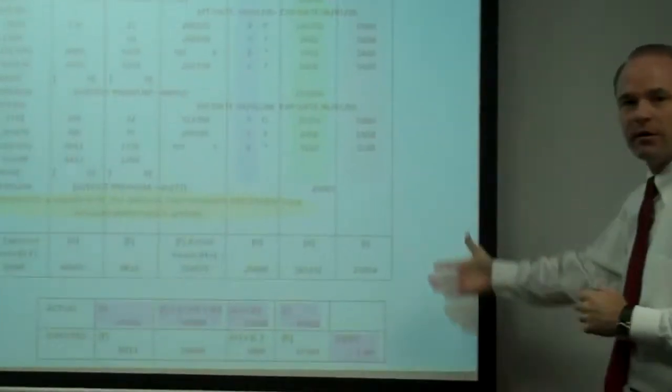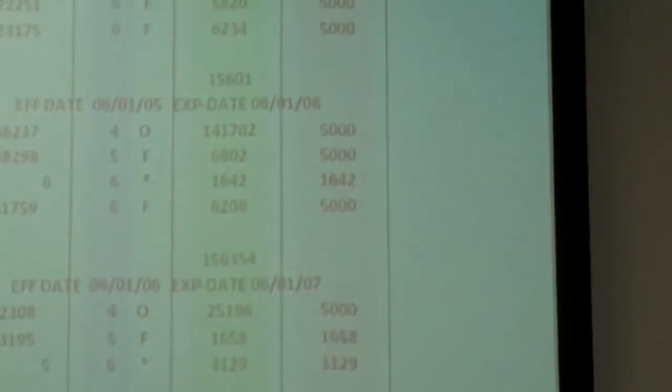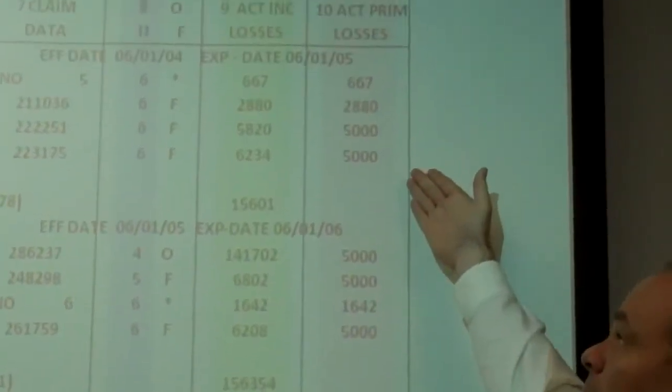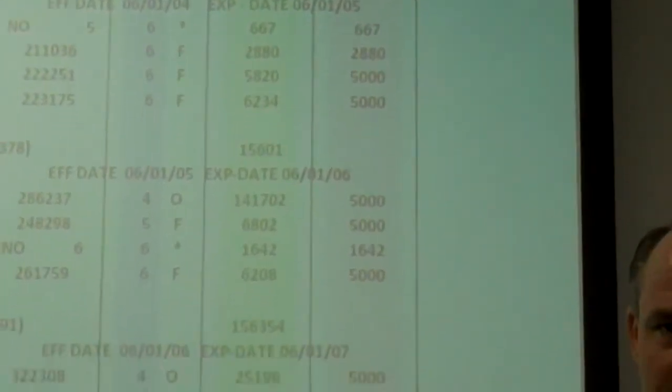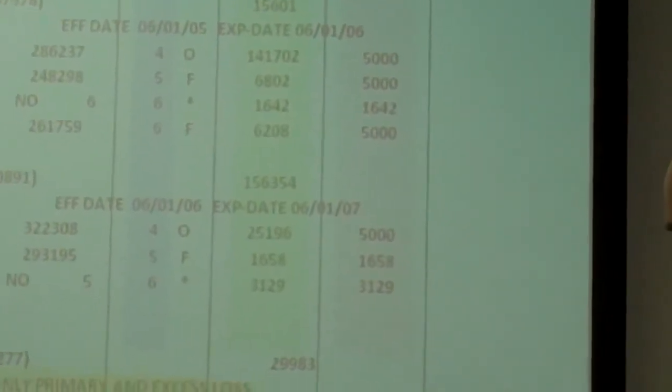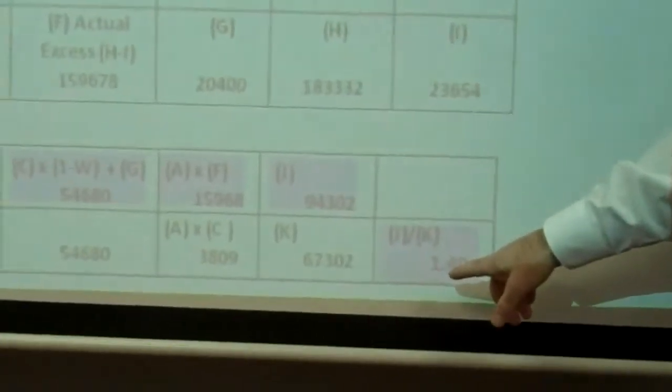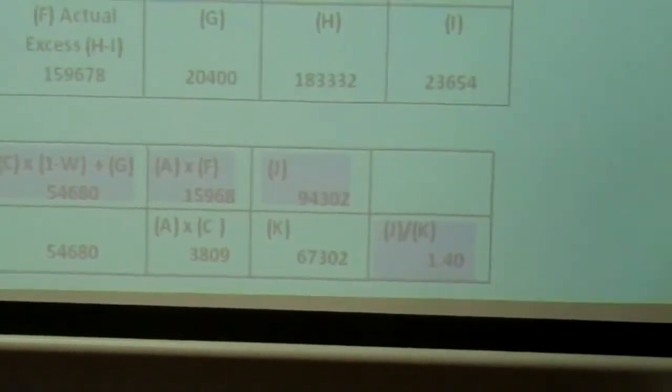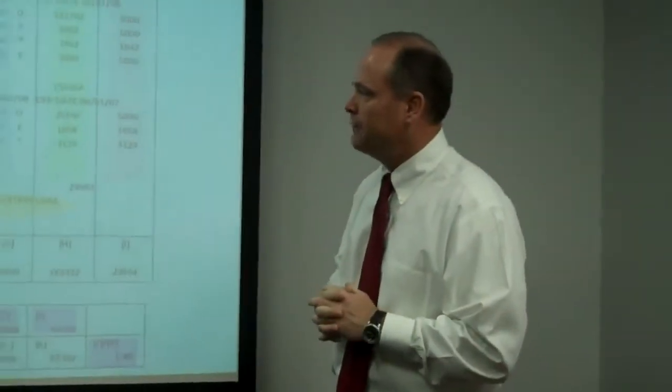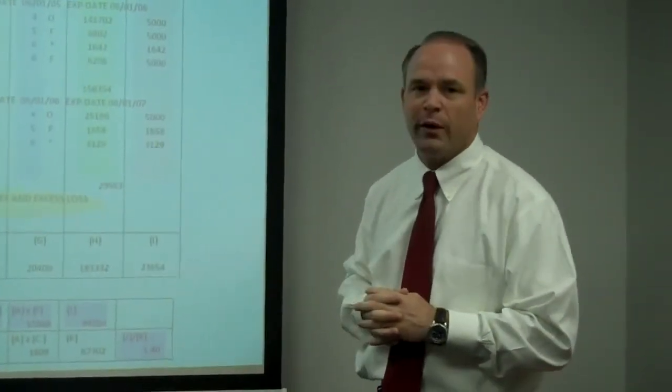You see here, this is an experience mod formula. This is the three years that this particular insured is living with. This number on the bottom right is the experience mod number for this insured. They are at a 1.40. That's not good. 1.00 is average.